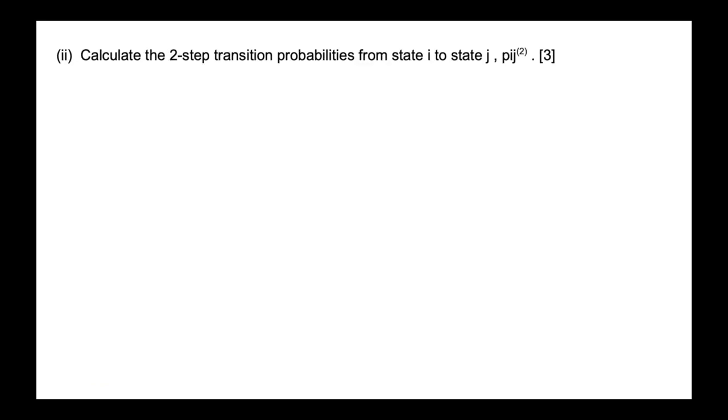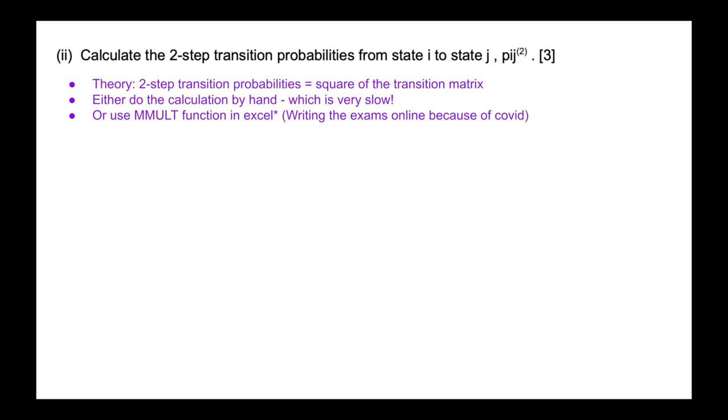So let's look at the second part of the question, which is calculate the two step transition probabilities from state I to state J. So this is probability IJ over two steps. So our theory, and this is why it's always important to hopefully you guys have read up on Markov Chains. You've gone through the ActEd notes and not just jumping into this question and trying to follow along because the theory will tell us that we have this two step transitional probabilities is going to be equal to the square of the transition matrix.